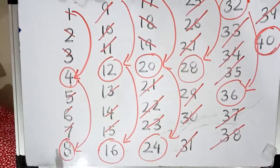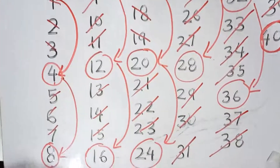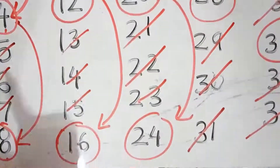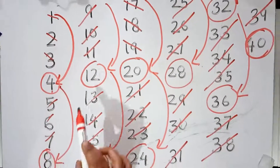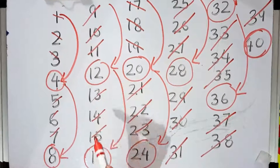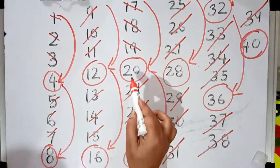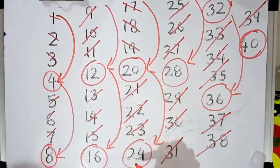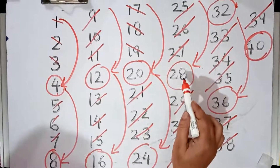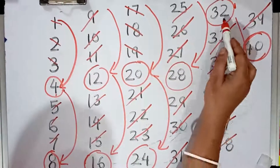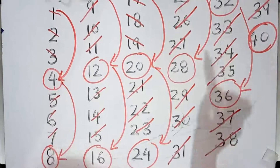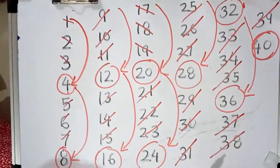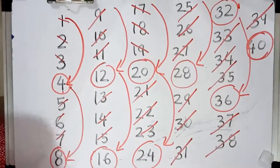So these are the skip counting by 4: 4, 8, 12, 16, 20, 24, 28, 32, 36, 40. With the help of this skip counting, you can learn the table of 4 also.